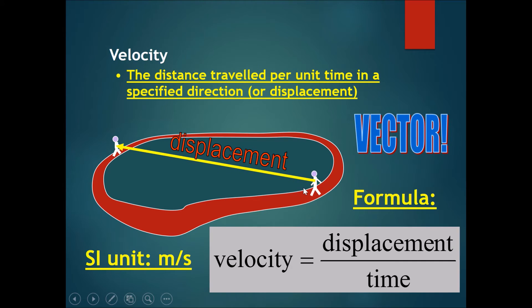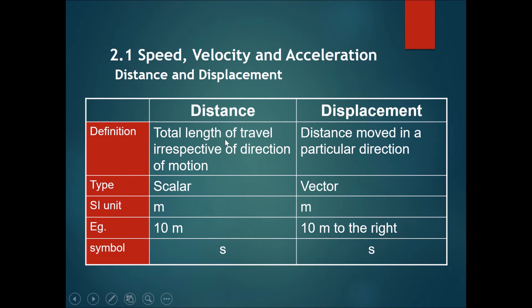So it's clear that for a bent path, distance will always be more than displacement. The only time where distance is exactly the same as displacement is if the object is moving in a perfectly straight line. Here's a summary comparison. This is the total length of travel irrespective of direction of motion. However...